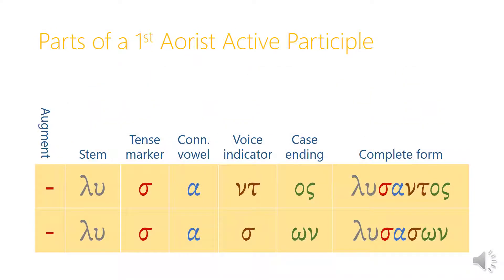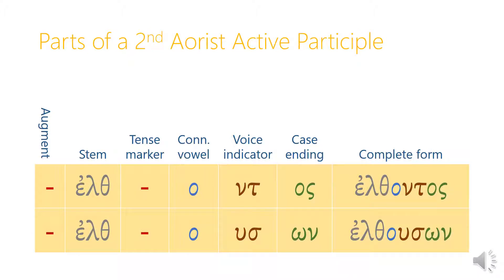To summarize: we're not memorizing all of these forms, but remembering the components that make up any participle. For active first aorist active participles: the stem, the tense marker (sigma), the connecting vowel (alpha), the voice indicator — nu-tau in the masculine and neuter active, sigma in the feminine active — and then case endings: third declension for the masculine and neuter, and first declension for the feminine.